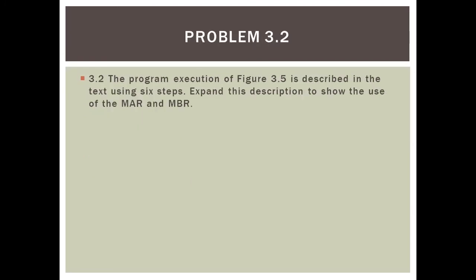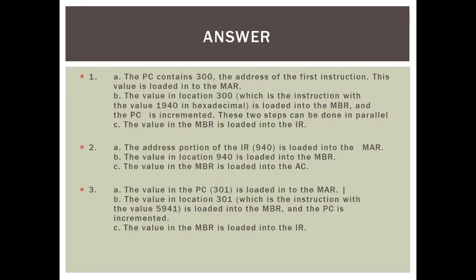Now we go to Problem 3.2. The program execution of Figure 3.5 is described in the text using six steps. Expand this description to show the use of the MAR and MBR. My answer: for step 1, the PC contains 300, the address of the first instruction. This value is loaded into the MAR. The value in location 300, which is the instruction with value 1940 in hexadecimal, is loaded into the MBR, and the PC is incremented.